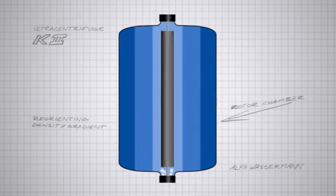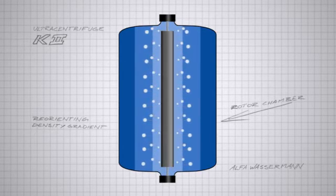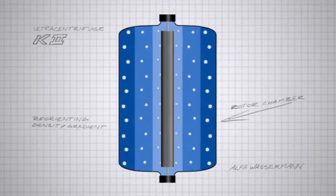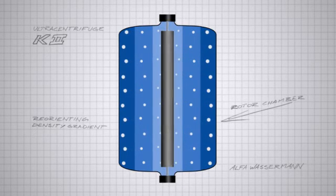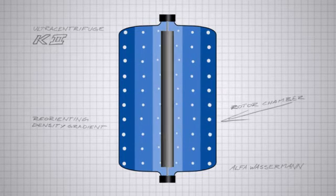Sample fluid is then pumped into the rotor in a continuous flow mode, and the sample particles begin to sediment radially. The sample particles will band within the zone where the gradient density equals the particle's buoyant density.